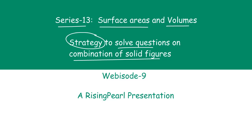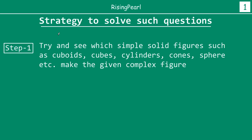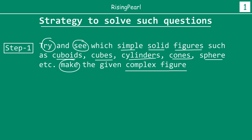This webisode will focus on strategy in solving combination of solids. The first step is to try and visualize which simple solid figures — such as cuboids, cubes, cylinders, cones, spheres, etc. — make up the given complex figure. That means we will be given a shape and asked to find out the total surface area of this given complex shape.